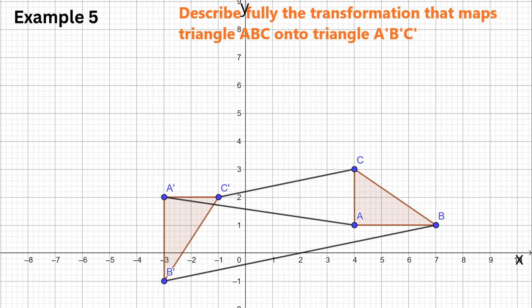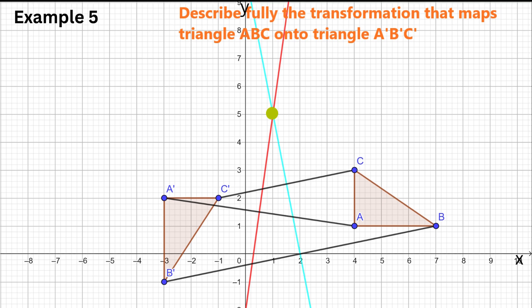Next, we construct the perpendicular bisectors of each line. We can find the midpoint of at least two of these lines and draw a perpendicular line through each. The point where the perpendicular bisectors intersect is the center of rotation.